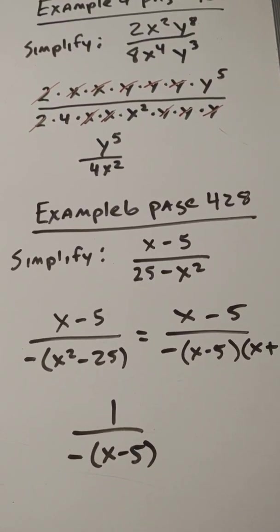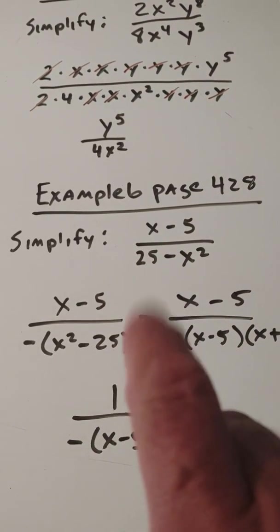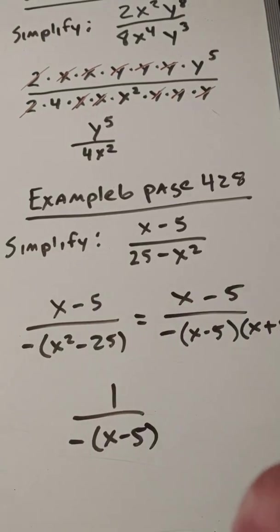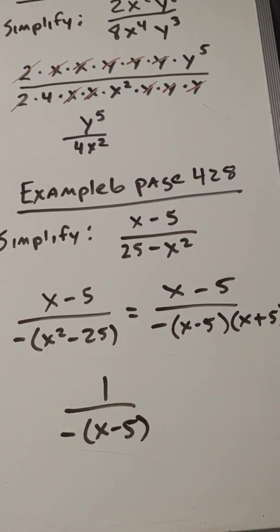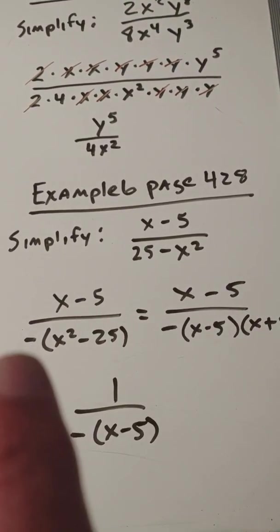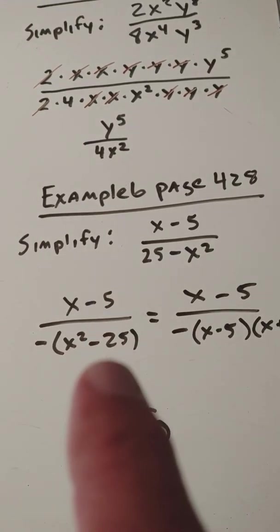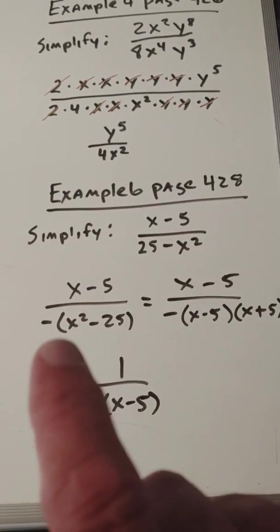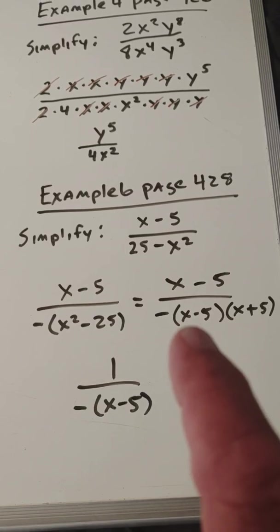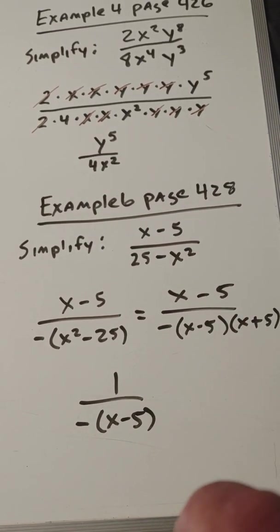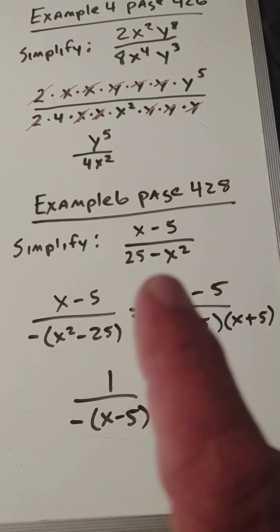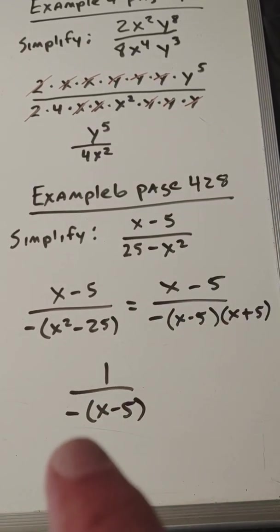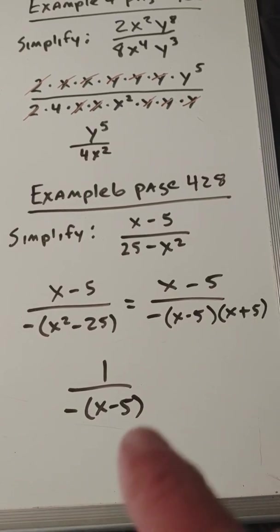Example 6 uses an important technique. We have (x − 5) / (25 − x²). Factoring the denominator as a difference of squares gives (5 − x)(5 + x), but that doesn't help because we need the variable in front. So we multiply the denominator by negative 1: 25 − x² becomes −(x² − 25). Now x² − 25 is a difference of squares factoring as (x − 5)(x + 5). We now have (x − 5) / [−(x − 5)(x + 5)]. The (x − 5) terms become 1, leaving 1 / [−(x + 5)]. Remember, if everything cancels on top, it's not 0 — it's 1. You can leave the answer in factored form.